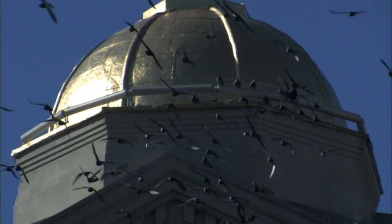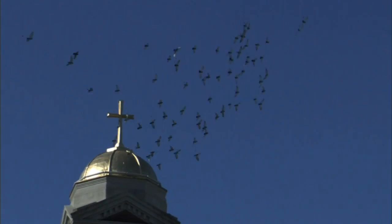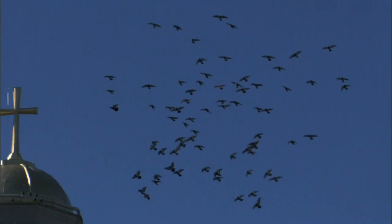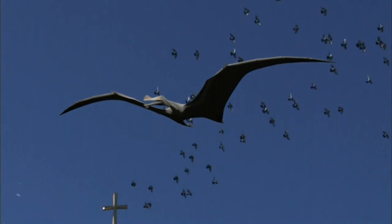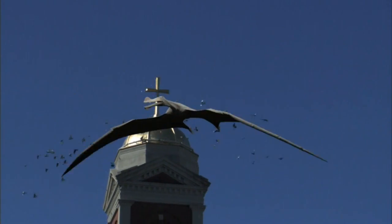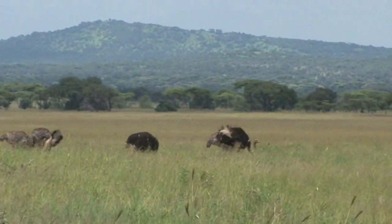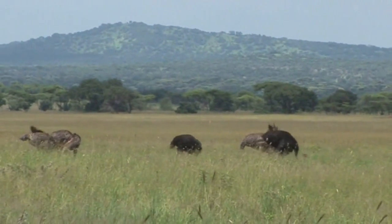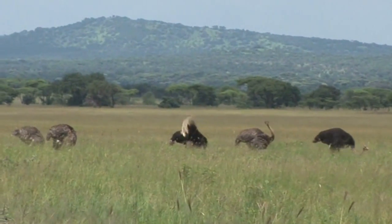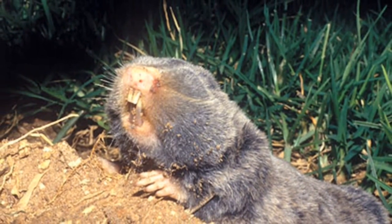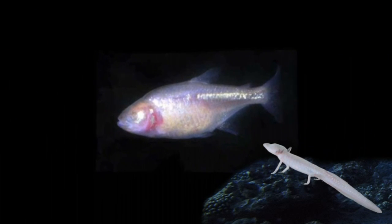In the examination of the structure of organisms, we frequently find organs that either have no function or have a modified function completely out of character with the structure. For example, wings are very complex structures specifically adapted for flying — so why do ostriches have wings? Ostrich wings are certainly not useless to the ostrich, but they are certainly useless as wings. The vestigial blind eyes of the mole and cave-dwelling fish and salamanders are easily explained only by reference to previous ancestors who had need of eyes.